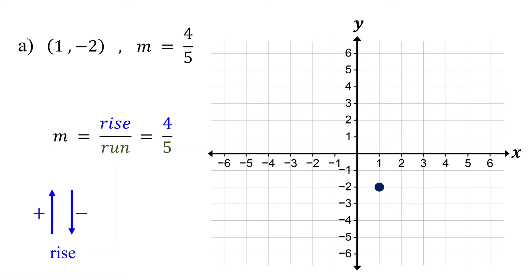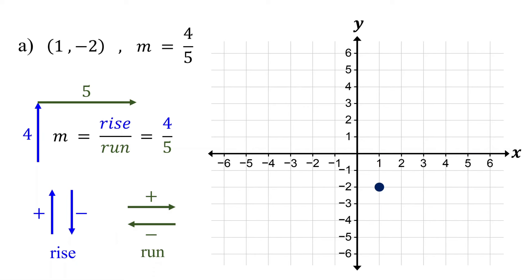Similarly, when the run is positive, move to the right. When it is negative, move to the left. So, for our example, the rise is 4 units up and the run is 5 units to the right. Now, starting from the point, move up 4 units. Then, move to the right 5 units and plot the second point.